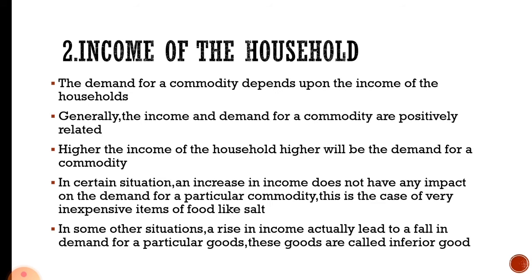The second determinant is the income of the household. The demand for a commodity depends upon the income of the household. Income and demand for a commodity are positively related — they are directly related.